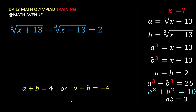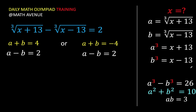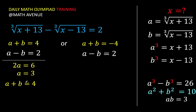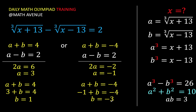This means two possible cases. Case 1: a plus b equals 4 and a minus b equals 2. Adding these equations gives 2a equals 6, so a equals 3, and b equals 1. Case 2: a plus b equals negative 4 and a minus b equals 2. Adding gives 2a equals negative 2, so a equals negative 1, and b equals negative 3.